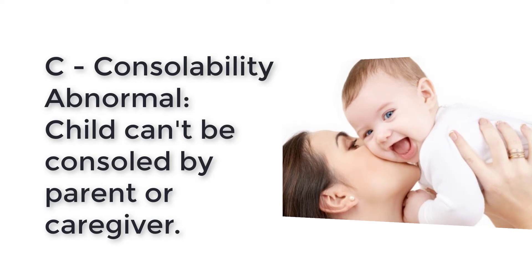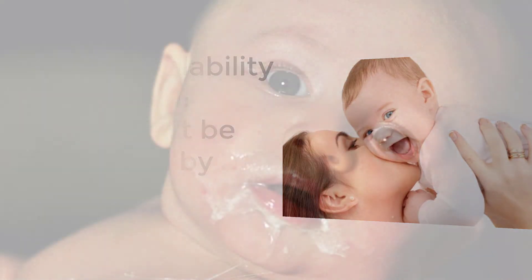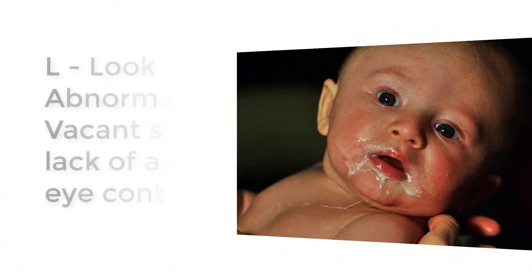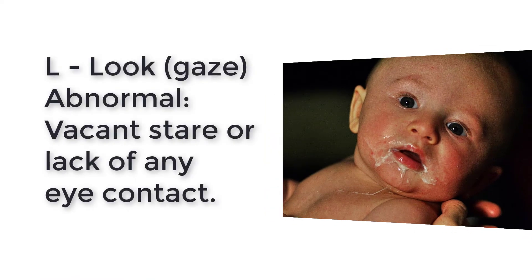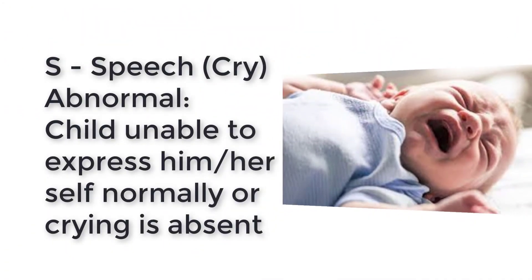Moving on to C for consolability — a child that's abnormal just can't be consoled or comforted by normal caregivers and doesn't respond normally to environmental stimuli like toys. Normal kids are able to be consoled by adults like mom or dad and respond in their usual way to toys and the environment. You also want to examine their look — if they have a vacant stare with a lack of eye contact, the child may not seem to recognize normal caregivers and won't pay attention to you. A normal child will be able to make eye contact.